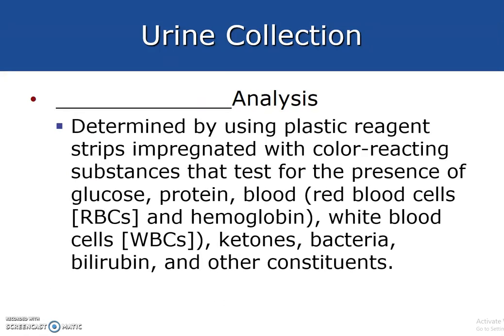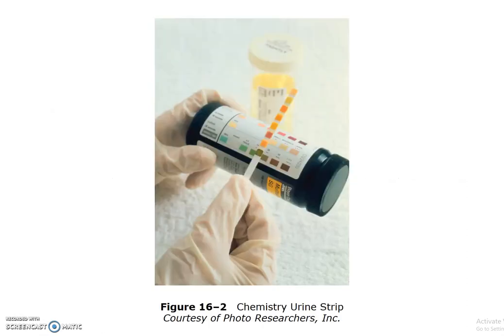Chemical analysis is determined by using plastic reagent strips impregnated with a color-reactive substance that tests for the presence of glucose, protein, blood, red blood cells, hemoglobin, white blood cells, ketones, bacteria, bilirubin, and other constituents. We will be performing this in lab.